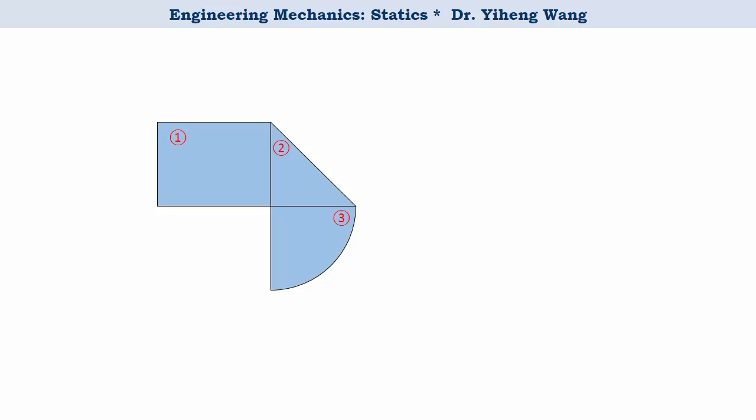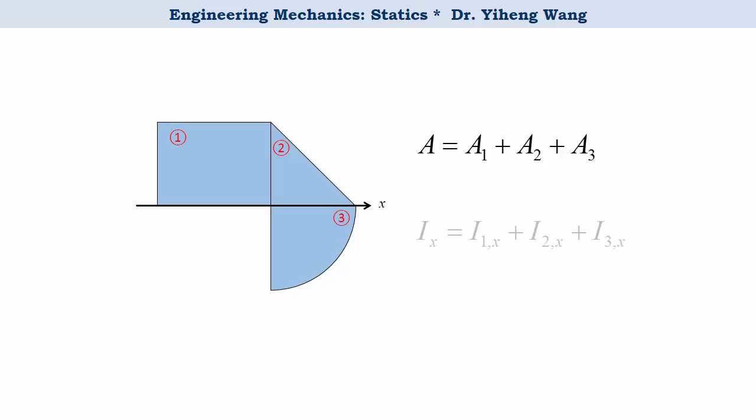First let me quickly go over the method we are going to use. I mentioned the similarity between area and area moment of inertia. As physical quantities, they are both always positive. And if you wish to find the total area of this composite shape, all you need to do is add the component areas together. It's the same for area moment of inertia. Unlike area, moment of inertia must be calculated about a specified axis. So if you want to find the moment of inertia of this composite shape about the x-axis, you simply need to add up the moment of inertia of each component shape about the same x-axis.